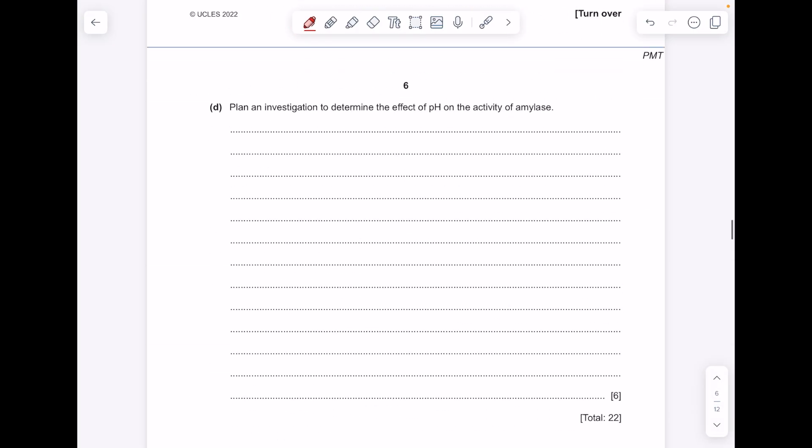Plan an investigation to determine the effect of pH on the activity of amylase. So we need to specify lots of variables. So we'll start with our independent variable. So that's what we're changing. The pH used. So give a range of pHs, e.g. pH 2, 3.